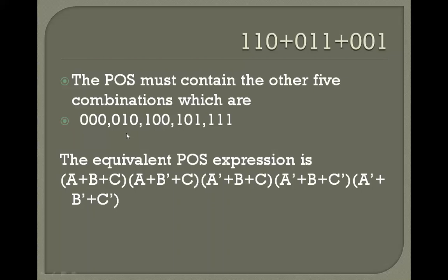Now we write the product of sum expression for these remaining combinations. In the POS form, a simple variable is represented as 0 and a complemented variable is represented as 1. Therefore 0·0·0 becomes (A+B+C); 0·0·1 becomes (A+B+C'); 0·1·0 becomes (A+B'+C); 1·0·1 becomes (A'+B+C'); and 1·1·1 becomes (A'+B'+C').